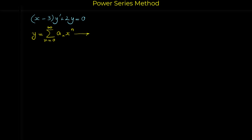From this, we have to find y prime, because in this differential equation we have y prime. We have to take the derivative of the power series. The derivative of the power series is sigma n a_n x to the n minus 1. We take the derivative of the general term: derivative of a_n x to the n is n a_n x to the n minus 1 — we bring the power down and subtract the power by 1.